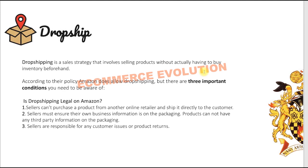First, a seller cannot purchase a product from another online retailer and ship it directly to the customer — you must use a wholesaler, not a retailer. Second, the seller must ensure their own business information is on the packaging, following Amazon's policy. Third, the product cannot have any third-party information on the packaging. Sellers are also responsible for any customer issues or product returns.